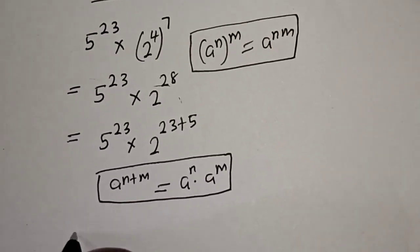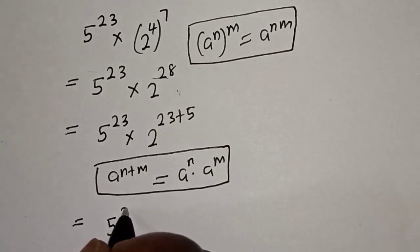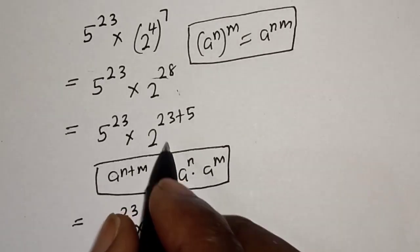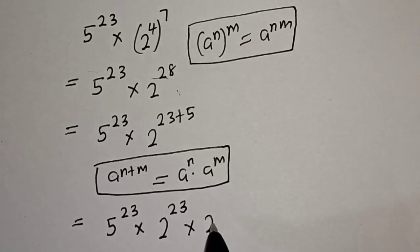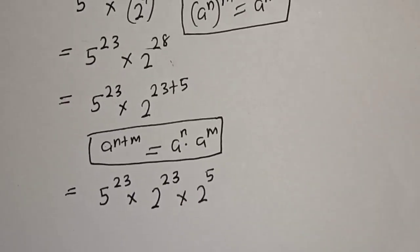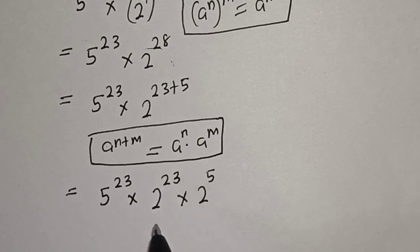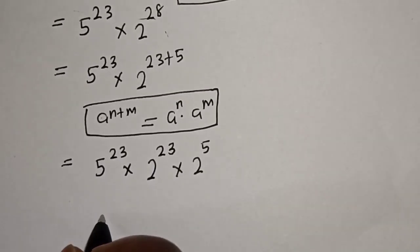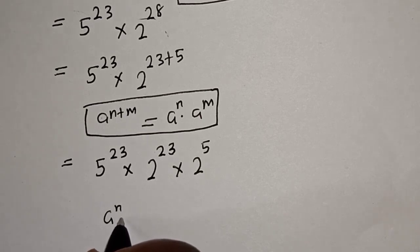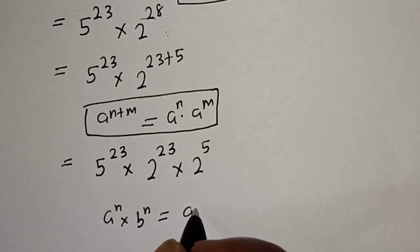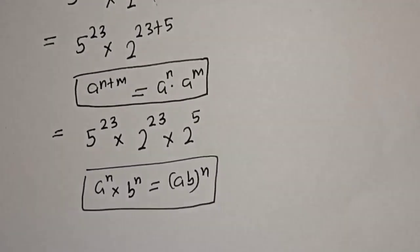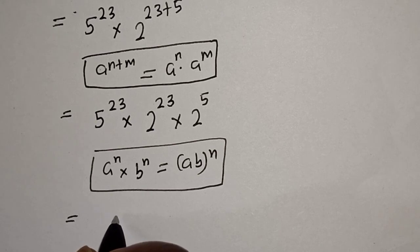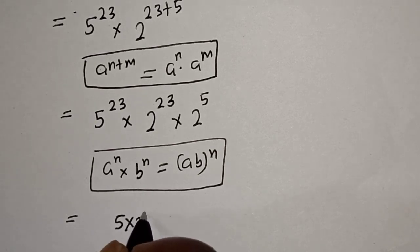Then this is equal to 5 raised to power 23 multiplied by 2 raised to power 23, times 2 raised to power 5. Here we have the same power 23 and 23. Take note of this rule: a raised to power n multiplied by b raised to power n is equal to a times b, raised to power n.